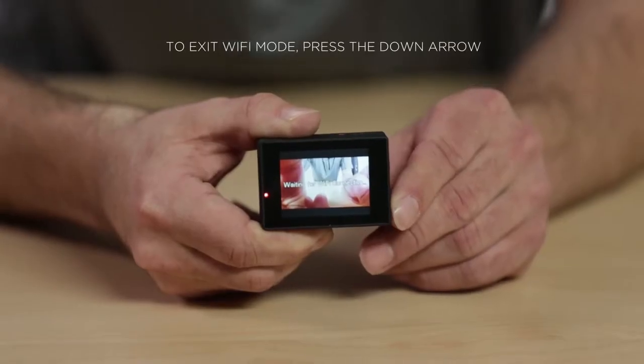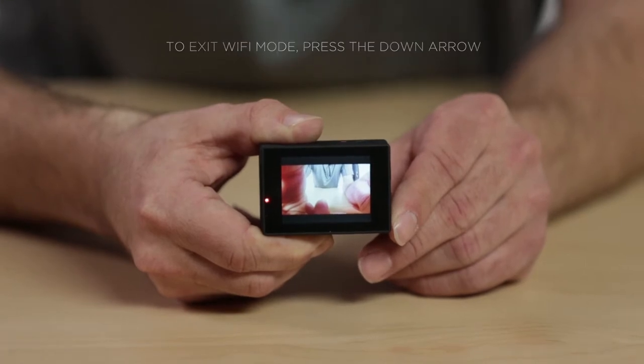You can also use the camera without Wi-Fi. To exit Wi-Fi mode, press the down arrow. When the camera is turned on, it defaults to video mode.